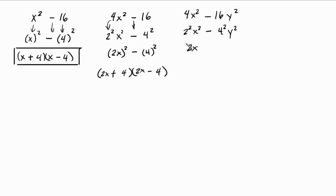Combine this: 2x quantity squared, bring down the minus, 4y quantity squared. Set up my parentheses. Now, 2x here, 2x here, 4y, 4y, and now plus minus, and there you go.